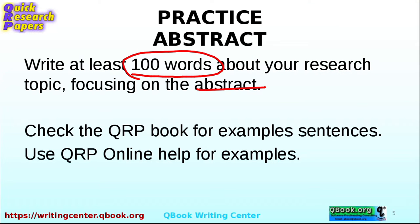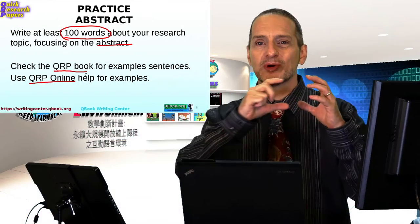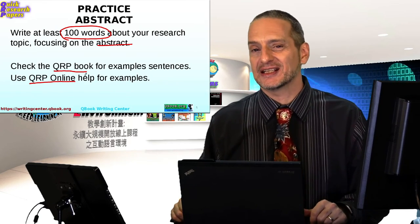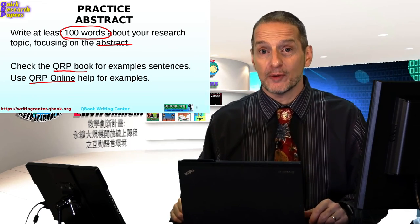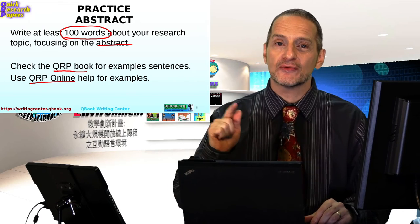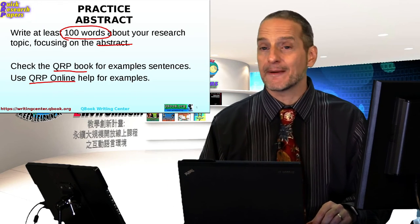You can use the QRP e-book which has example sentences, and don't forget the QRP online system has online help. That little yellow box that appears next to where you're writing — you can click on that and you're going to get online help with many example sentences. So please don't forget to use that.